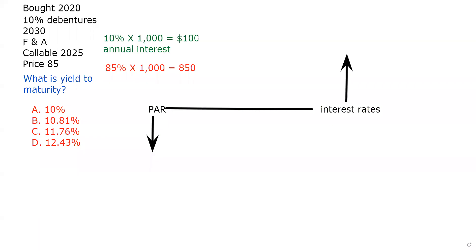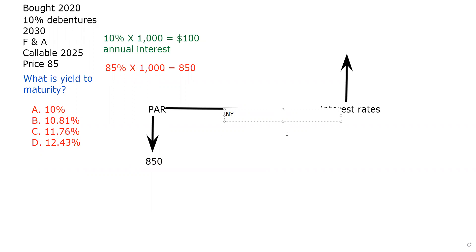I know that because this is $850 — less than par. The fulcrum of the teeter-totter is the nominal yield, coupon, fixed or stated rate of return. We have the current yield, the yield to maturity — which is what this question is about — and the yield to call. When we buy a bond at par, all of those yields are the same.